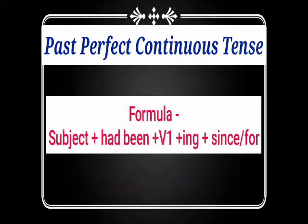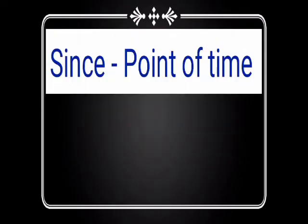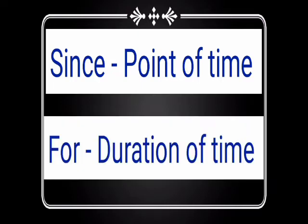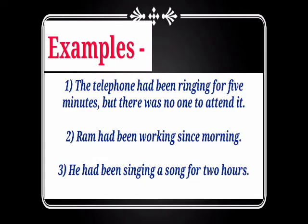The structure of this tense is: Subject + had been + first form of the verb with -ing + since or for (for timing). Since is used for showing a point of time or particular time when an action started, and for is used for the duration of time for which an action has been going on.